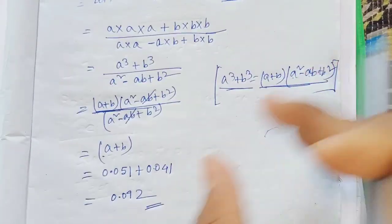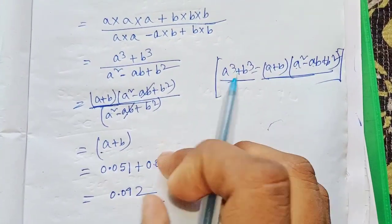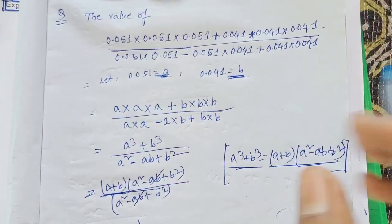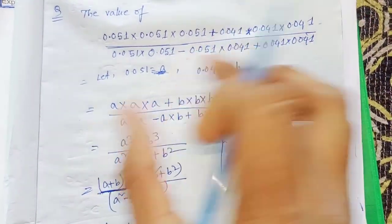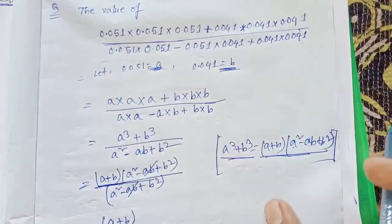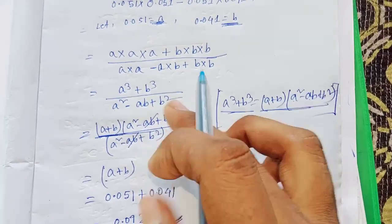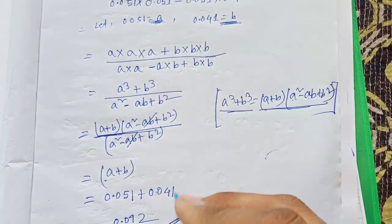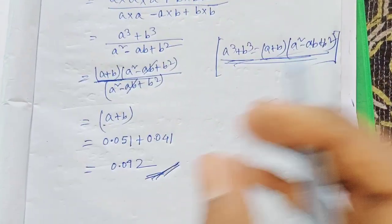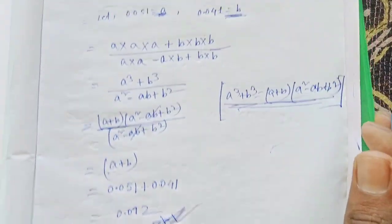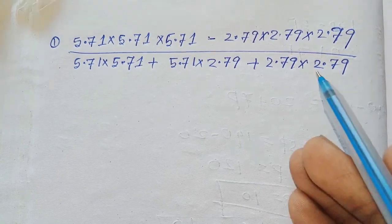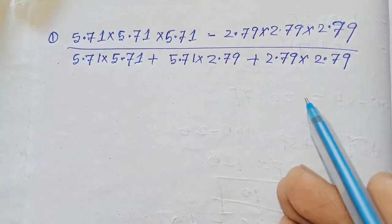This type of expression can be made very simple by assuming values a and b. You should know the formula for a³ + b³ and then you can solve it easily.